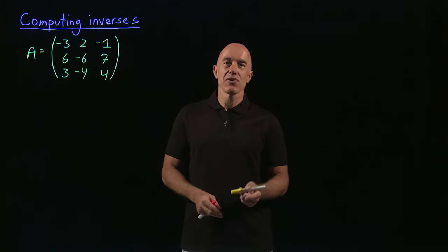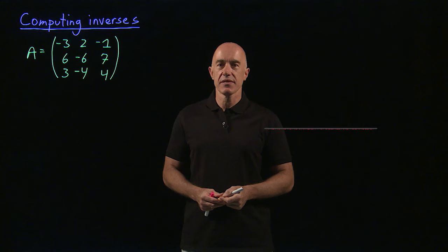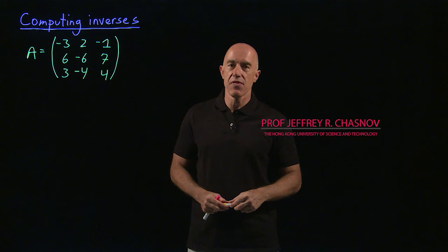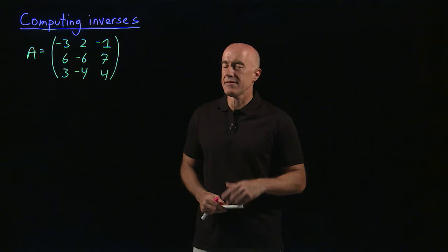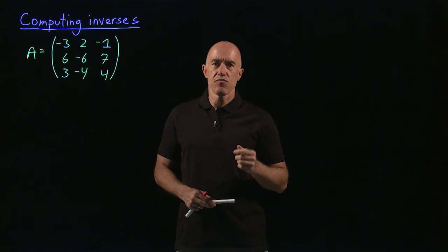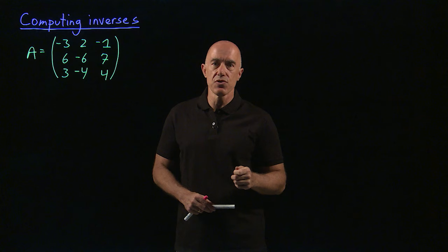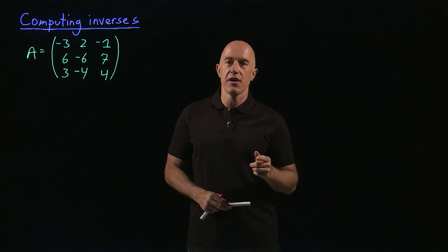We learned about the reduced row echelon form of a matrix. In this video, I can give you one practical application of that, which is to find the inverse of a matrix. As the example I'm going to work, we have this matrix A given here. Remember, not all matrices have inverses, but some of them do. They have to be square matrices. This one has an inverse. So the question here: how do we compute the inverse of this matrix?